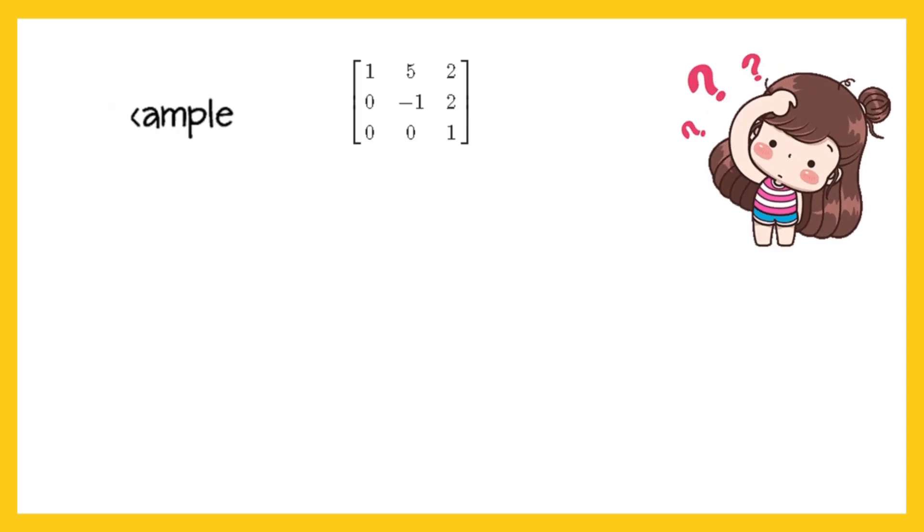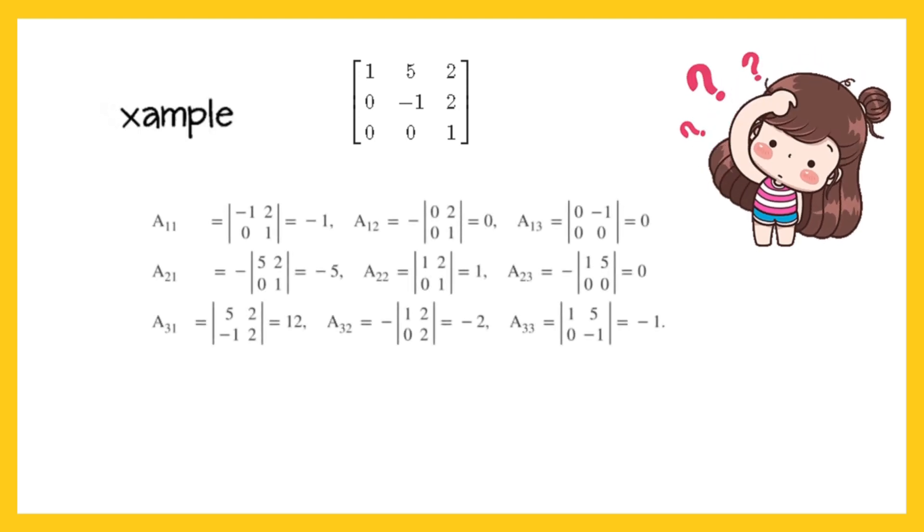Question: Find the inverse and adjoint of the matrix as given in the figure. Solution: We have to find the inverse of this matrix. First we will find all the cofactors individually and then the adjoint of the matrix.